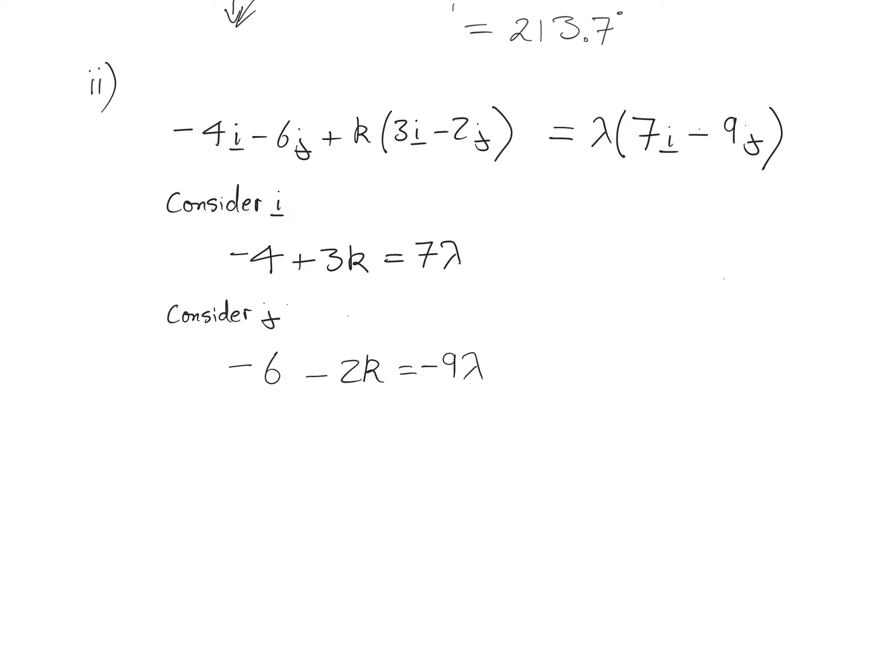Now we're going to solve these equations. I'm going to multiply the top one by 9, because I want to get rid of the lambda, and I get minus 36 plus 27k equals 63 lambda. Now I'm going to multiply this one by 7. I get minus 42 minus 14k equals minus 63 lambda.